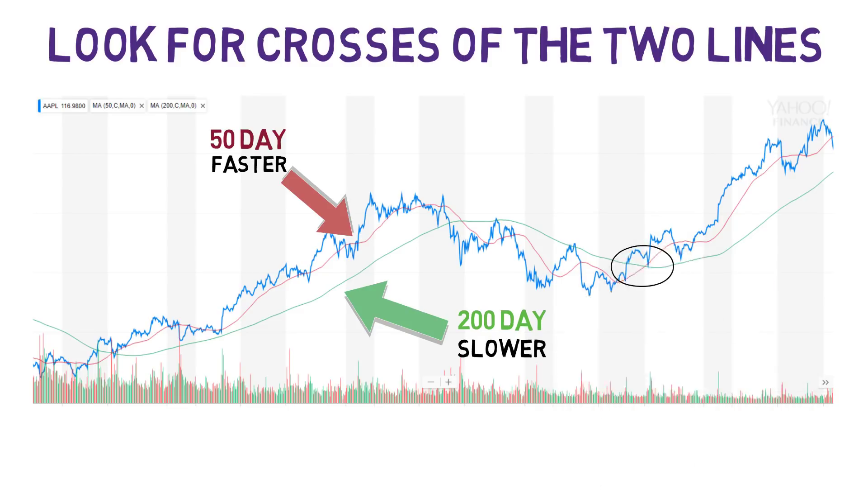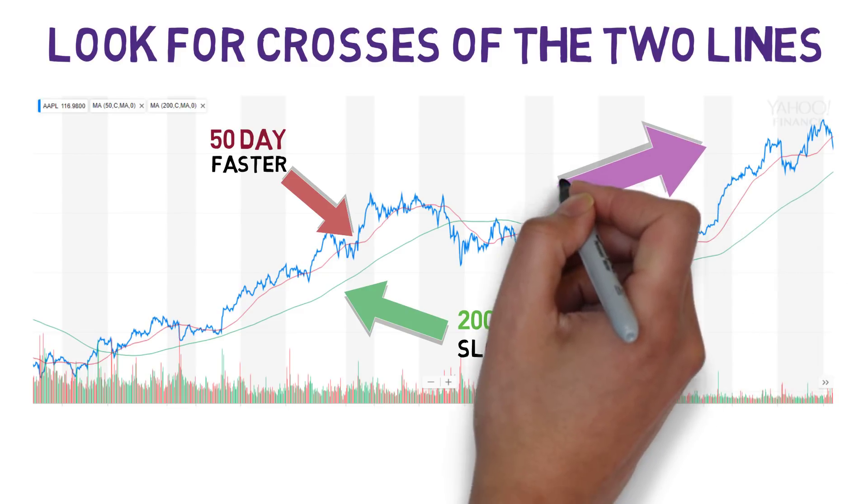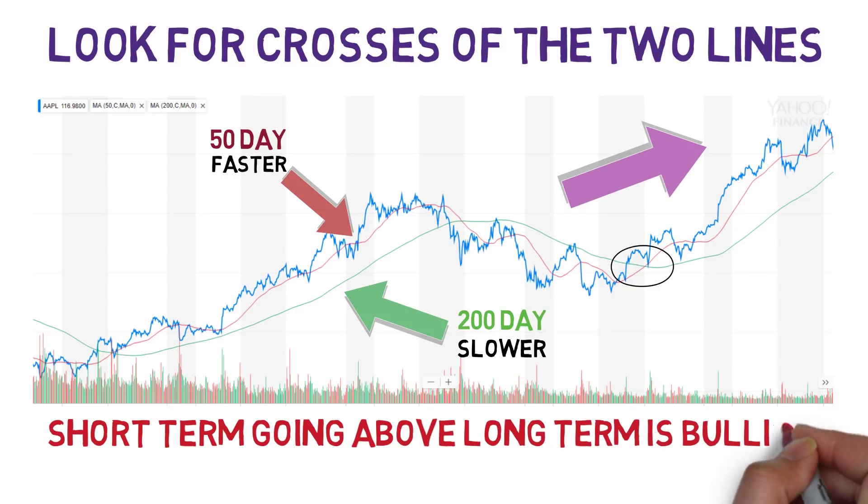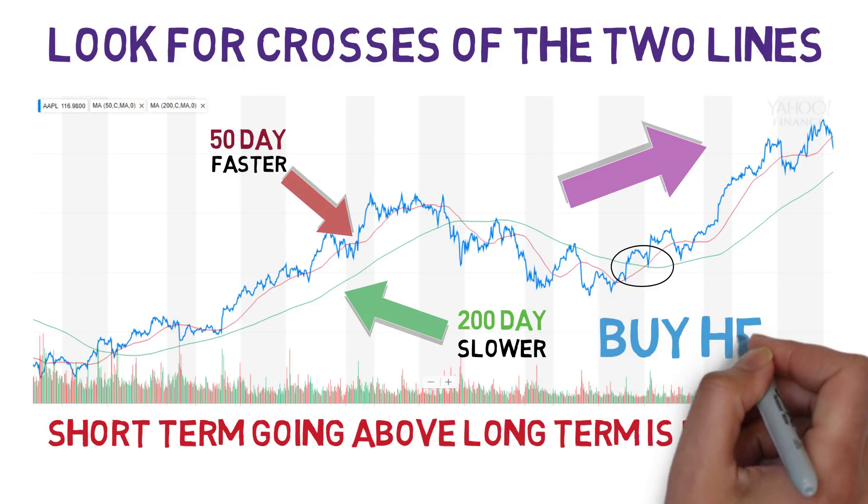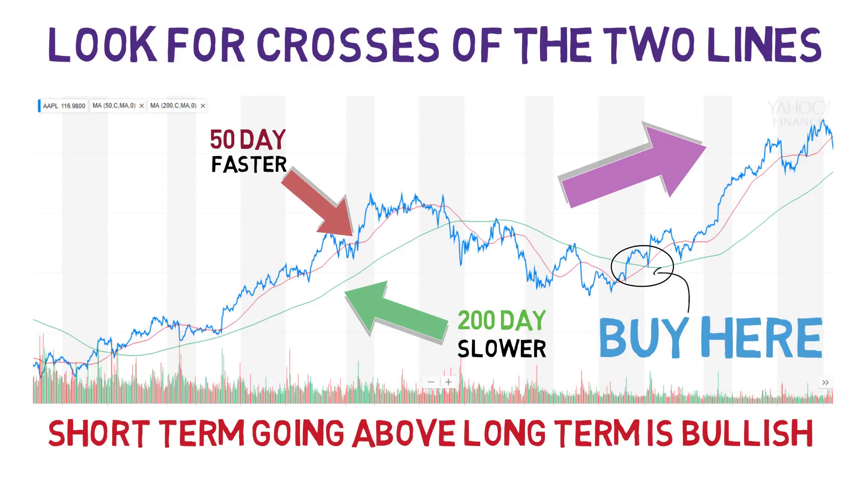We can see for Apple, it crossed right here, where the 50-day average went above the 200. If the shorter average goes above the long-term, it means the stock is very bullish and it's a signal to buy. If the short-term pattern is moving high like that, the stock is getting traction.